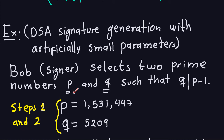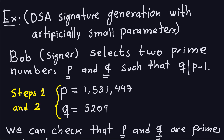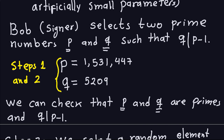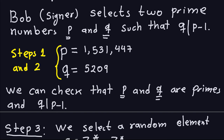In this example, Bob selects two prime numbers P and Q such that Q divides P−1, performing steps one and two together. We choose a specific small value for P and a corresponding small prime Q. You can verify that P and Q are both prime and that Q divides P−1 — a calculator can handle this. That completes steps one and two.